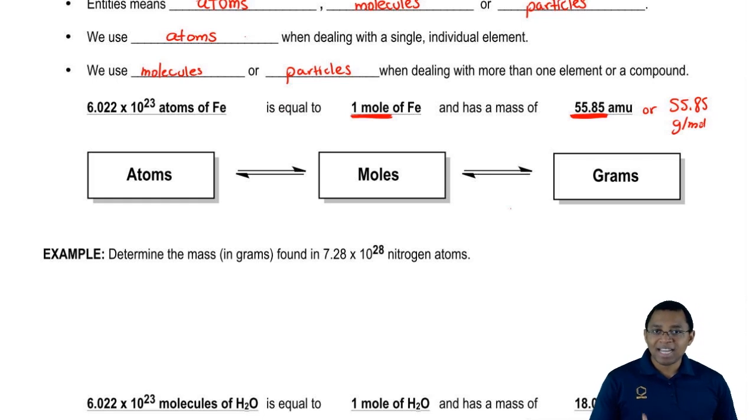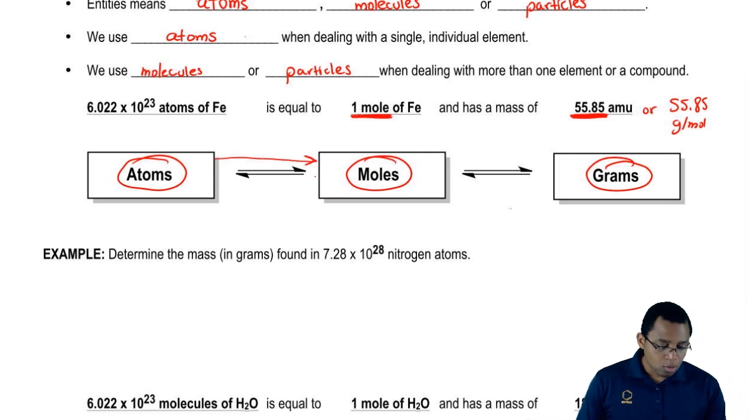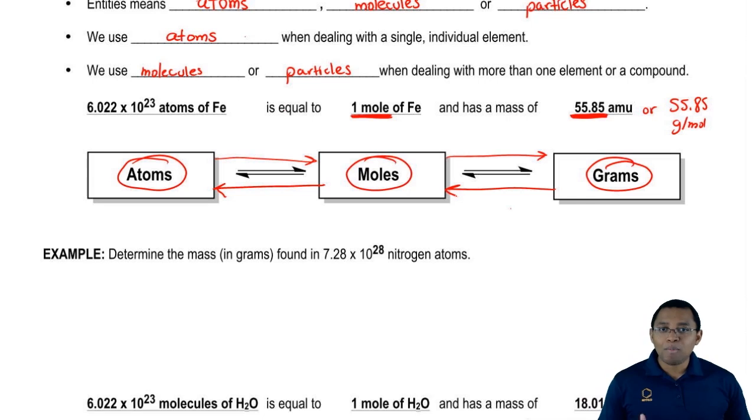What we need to realize here is that there's a connection. We can go from atoms to moles to grams, and I show you double arrows meaning we can go either way. So we can go from atoms to moles or moles to atoms, we can go from moles to grams or grams to moles. The arrows go both ways.